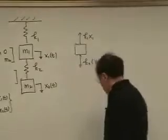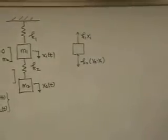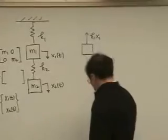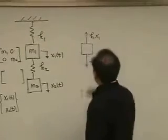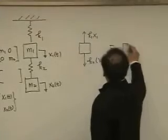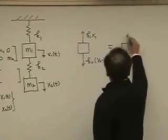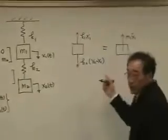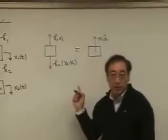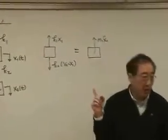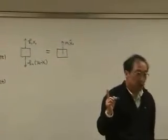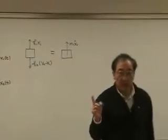The arrow has to be in this direction if X2 is larger than X1. And that has to be balanced by M1X1 double dot. This simply expressed pictorially Newton's second law. Newton's second law says unbalanced force will induce the mass times acceleration.